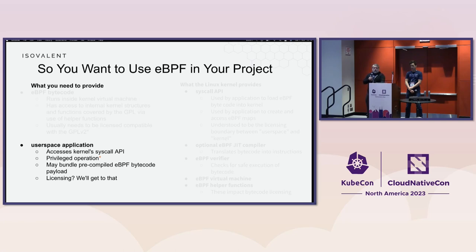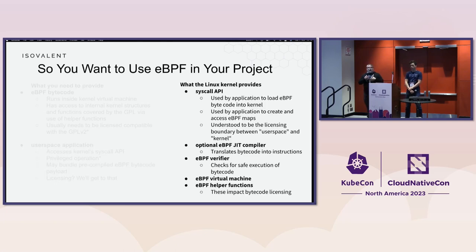It's usually run privileged — usually, there's an asterisk there. There are some small use cases where you don't have to run as a privileged application. But the Linux kernel provides a whole bunch of stuff for you already: there's a syscall API that you interact with so you can actually load the eBPF programs and load the maps that they use to exchange data with the user space. There's also a just-in-time compiler, a verifier, and a virtual machine — all of this is inside the kernel space. This is the real magic: all those components that you don't have to provide. You just have to load your bytecode into the kernel.